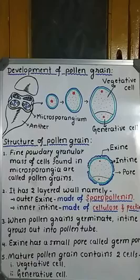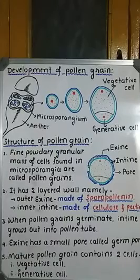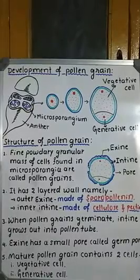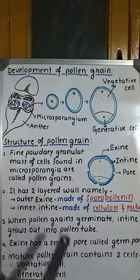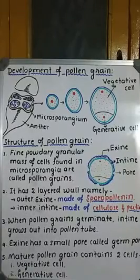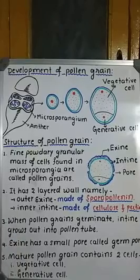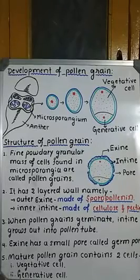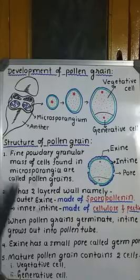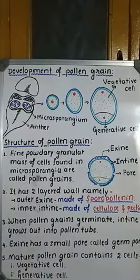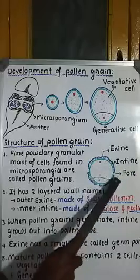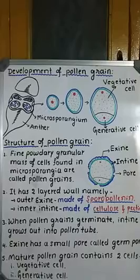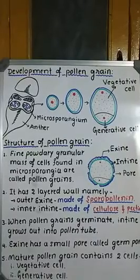This is about the structure of the pollen grain. A likely exam question is: 'Explain the structure of pollen grain with a neat labeled diagram' — a 100% expected five-mark question. You should write five points along with the diagram, mentioning exine, intine, germ pore, vegetative cell, and generative cell to get full marks.